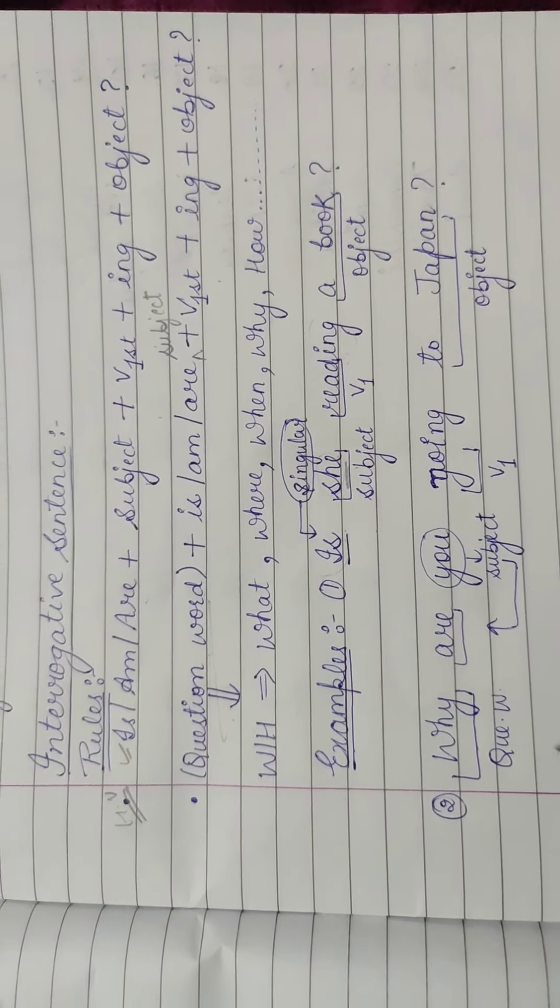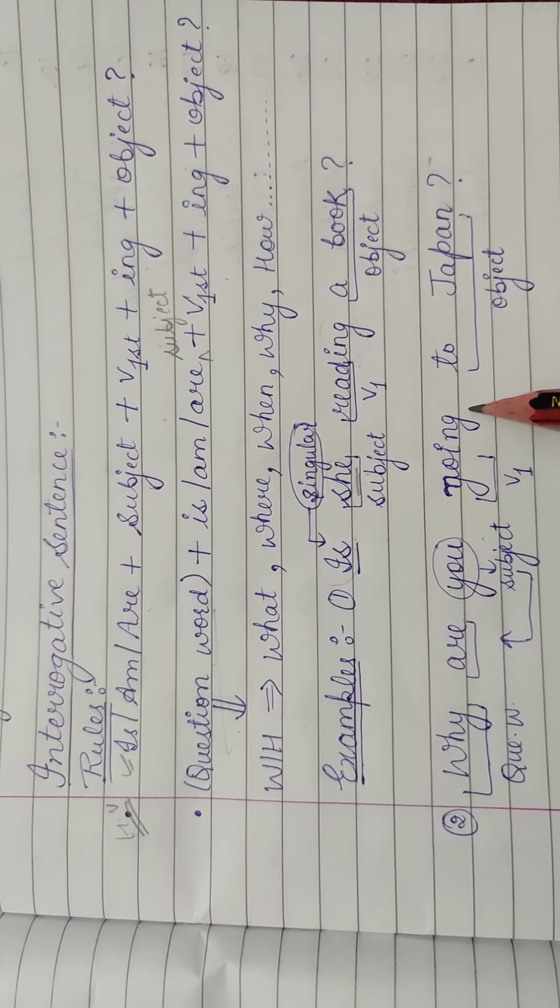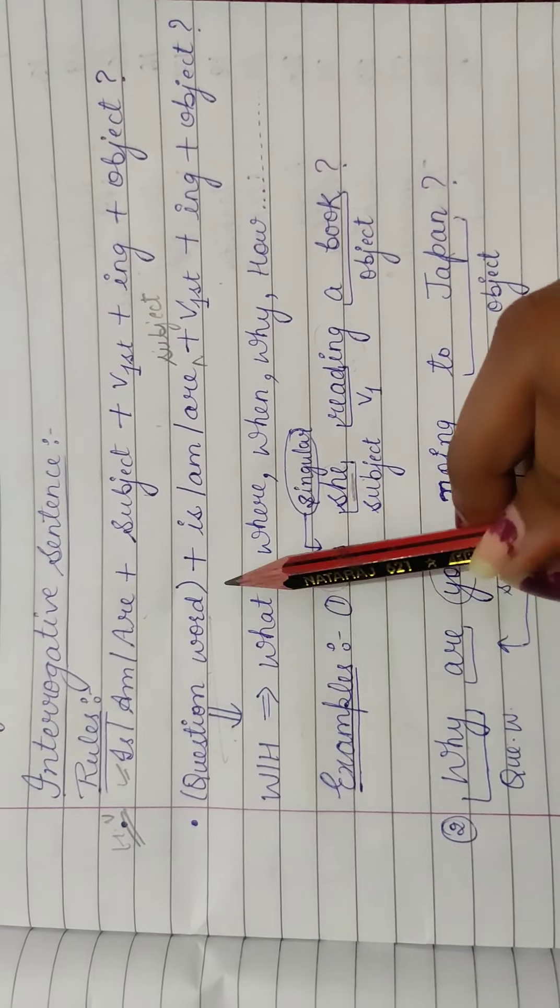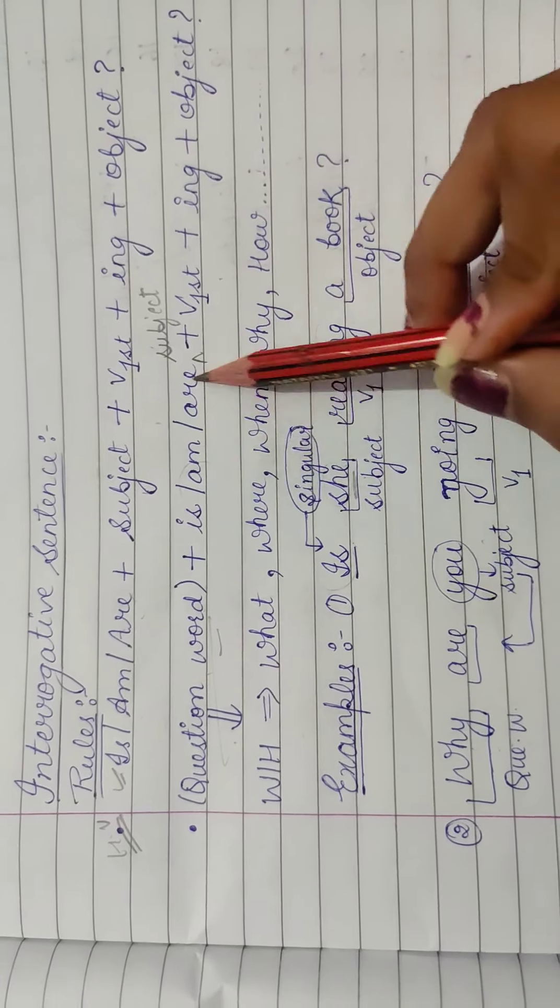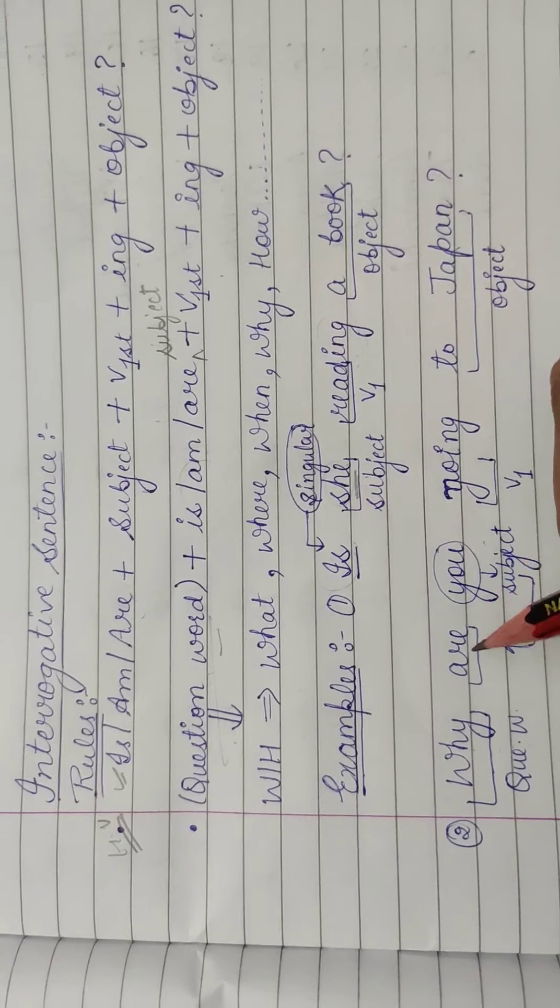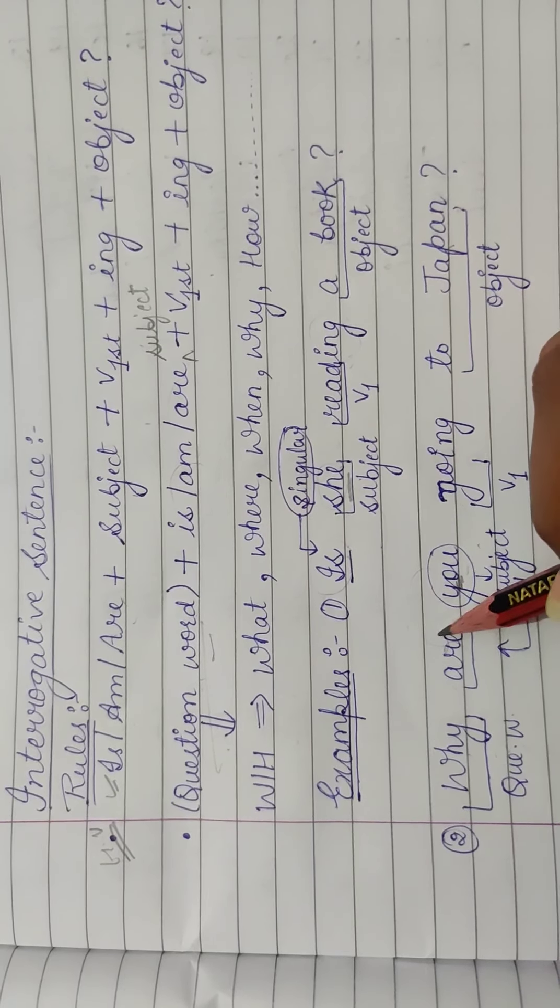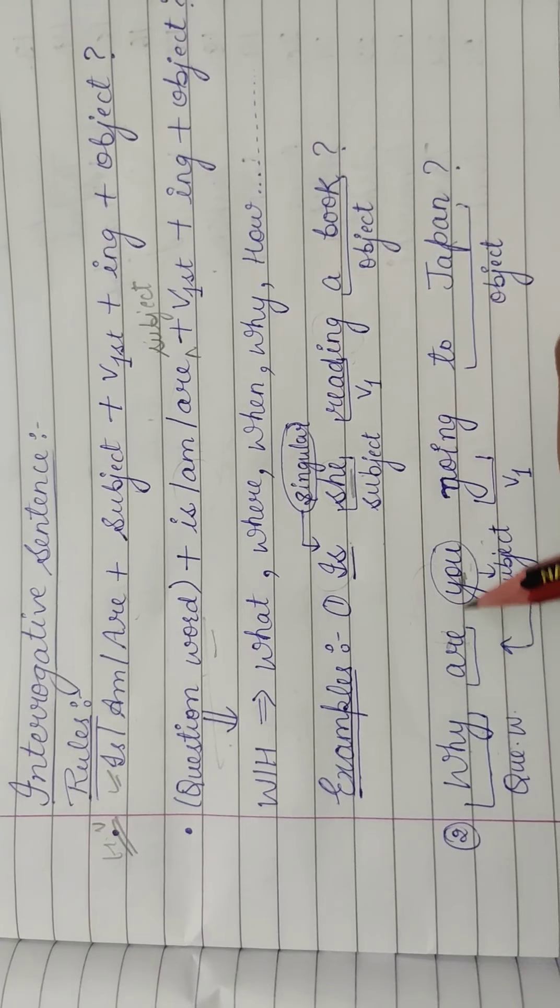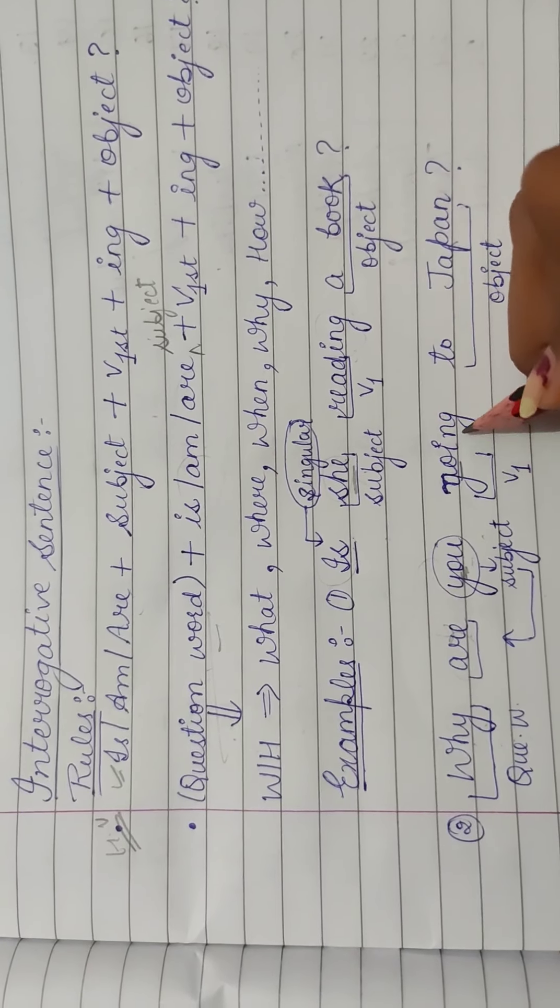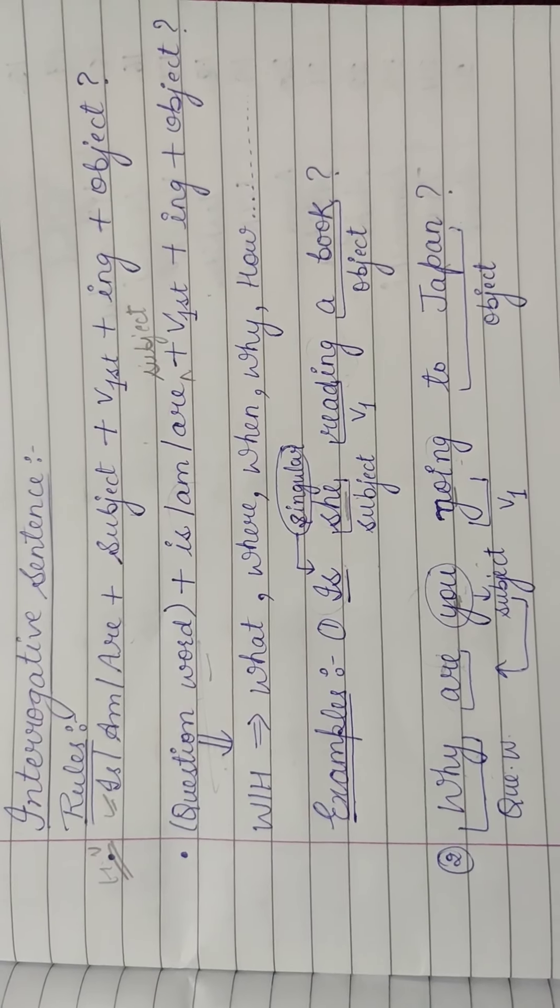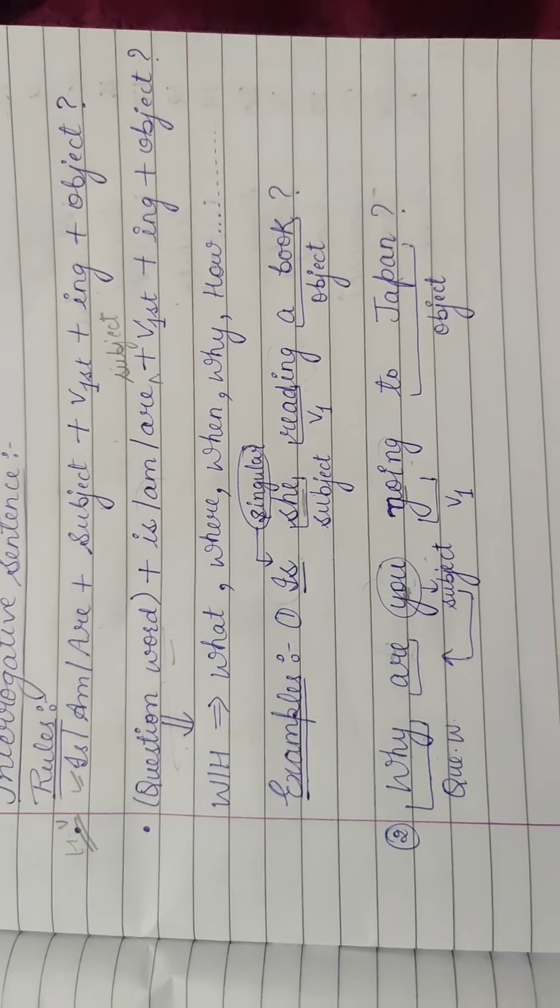Phir aapka question word wala. Tum Japan kyun jaa raha ho? To why, maine bole. That is question word aajata hai. Aagya, uske baad, is hamara miss, aapka ek jis lagana hota hai. Are kyun laga hai? Kya ki you hai humare subject hai. You ke saath, maine kiya bata tha? Are aata hai. To you - why are you, phir subject, aapke verb ki first form, uske ta ai, ing lagaya, then aapka object aagya. Why are you going to Japan? Tum Japan kyun jaa raha ho? Why are you going to Japan? Ta hiya aapka question ho gaya.